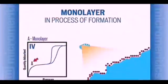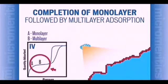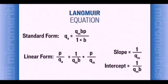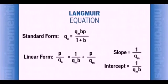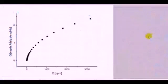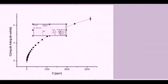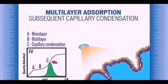Now, about the adsorption isotherm: a curve obtained by plotting at constant temperature the quantity of adsorbate against the concentration of the substance in the original gas or solution. There are mainly three types: Freundlich, Langmuir, and BET. Focusing on Langmuir — he made assumptions including that only a monolayer is formed on the surface, there is no lateral interaction among adsorbed gas molecules, and the rate of adsorption is directly proportional to the pressure of gas and the number of vacant sites. Even if the first layer is not filled, the second layer starts filling irrespective, giving the graph as shown.